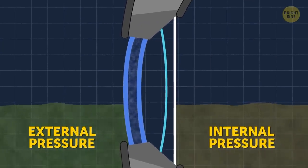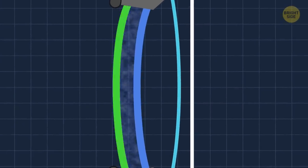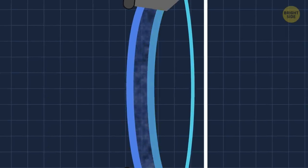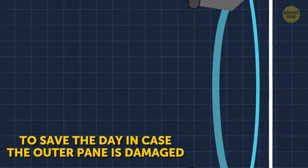As I said earlier, during the flight, the pressure inside the plane is way higher than outside. That's why the purpose of the outermost pane is to carry all the cabin pressure. The pane in the middle is almost redundant, then it's designed to save the day in case the outer pane is damaged.